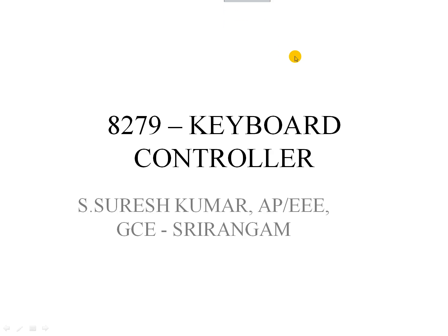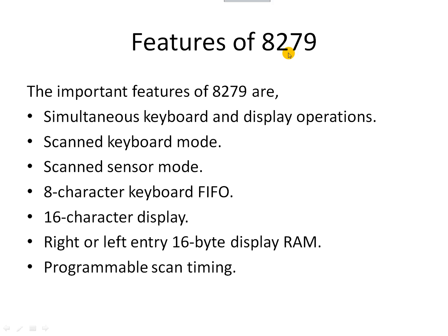Welcome to this lecture on the 8279 keyboard and interface controller. The 8279 has some important features, including simultaneous keyboard and display operations. It is mainly used for interfacing keyboard and display operations with microcontrollers and microprocessors, especially the 8085 and 8086, and in microcontroller sections it is mainly used with the 8051. Other microcontrollers like PIC have their own keyboard and display modules, but basic microprocessors need the 8279 for their interfacing of keyboard and display devices.